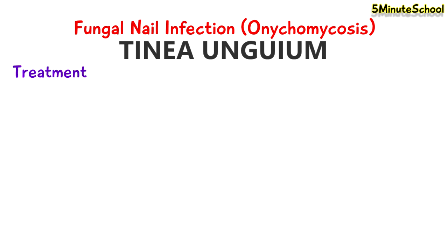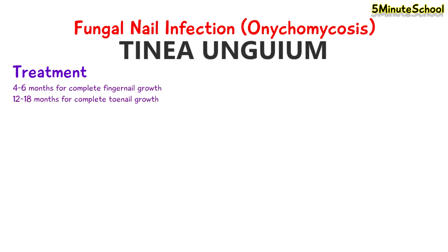Treatment of fungal nail infections is not instant and may take time. It takes four to six months for fingernails to grow out completely and 12 to 18 months for toenails to grow out completely. With asymptomatic cases, no treatment could be an option, because sometimes oral antifungal medications may cause unwanted side effects.